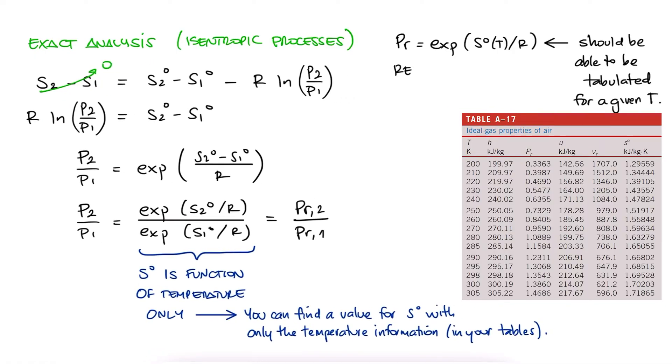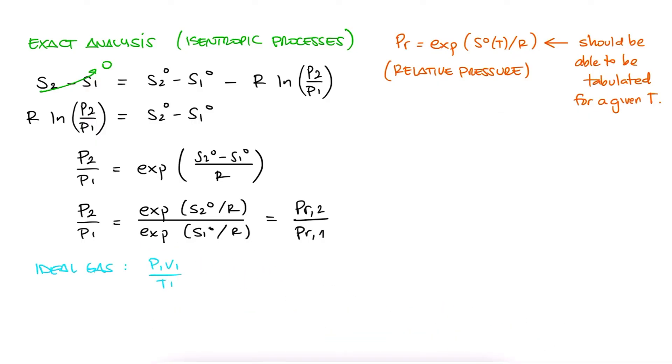And that's why they are also part of some of the tables we have. Notice the Pr column in your tables. Additionally, using the ideal gas equations, v2 over v1 is P1 T2 over P2 T1, which if isentropic is equal to Pr1 T2 over Pr2 T1, and again like before,